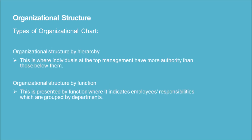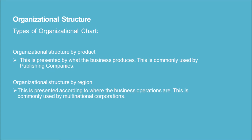3) Organizational structure by hierarchy — individuals at top management have more authority than those below them. 4) Organizational structure by function — employees' responsibilities are grouped by departments. 5) Organizational structure by product — structured by what the business produces; commonly used by publishing companies. 6) Organizational structure by region — structured according to where business operations are located; commonly used by multinational corporations.